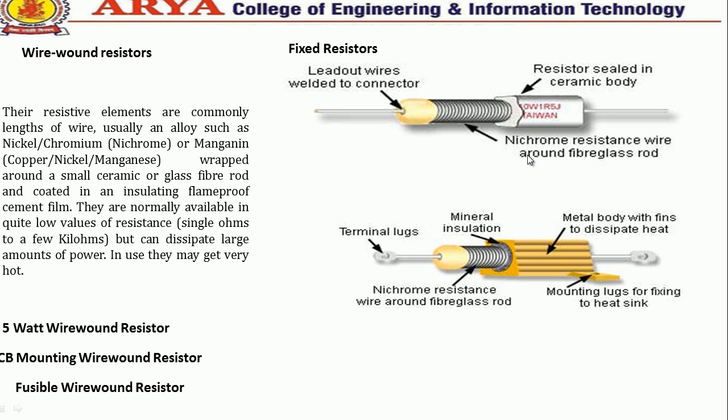Wire-wound resistors are normally available in quite low values of resistance, from single ohms upward, but can dissipate large amounts of power. In use, they may get very hot.